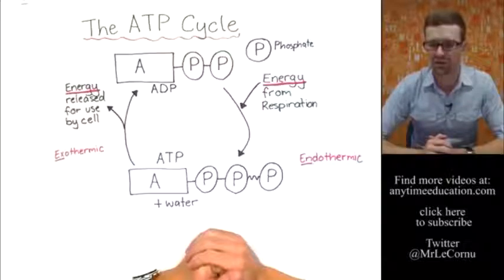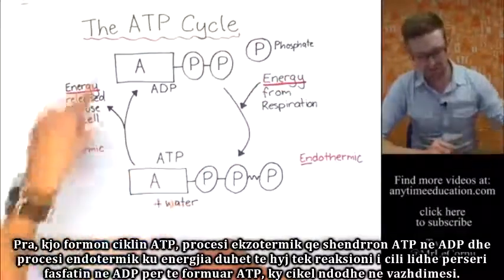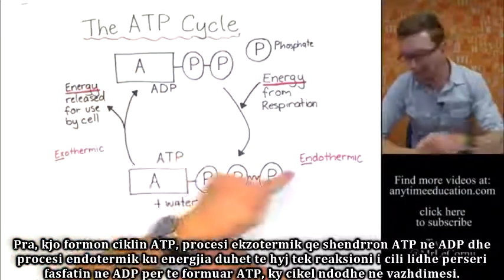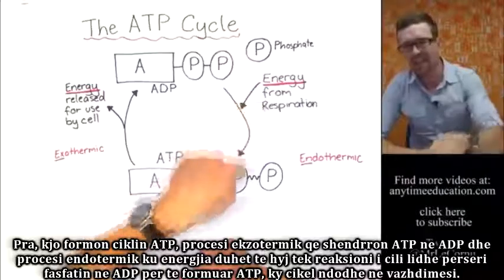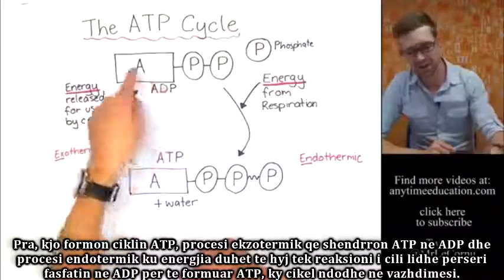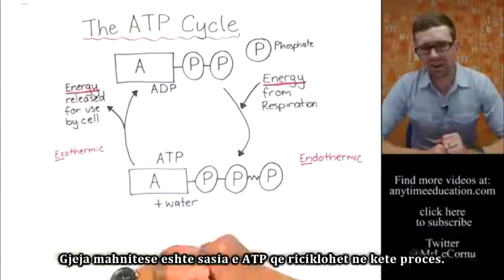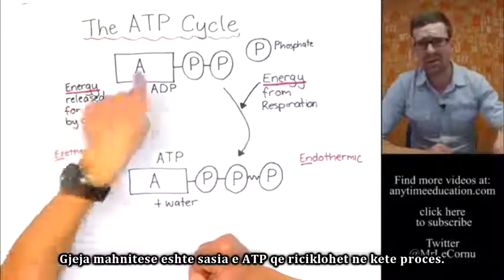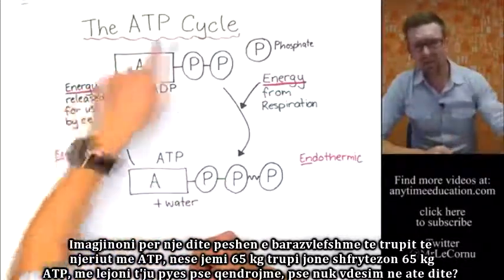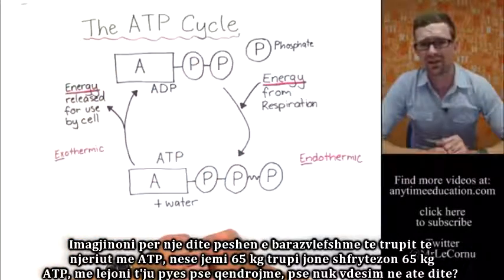Check those videos out if you haven't already. So that forms our ATP cycle: the exothermic process of breaking down ATP to ADP and phosphate, and the endothermic process where energy needs to enter the reaction — attaching the phosphate back onto ADP and forming ATP. That cycle occurs continuously. And an amazing thing is the amount of ATP that actually gets recycled in this process — in fact, in one day, the equivalent of a human body weight of ATP is recycled in your body.